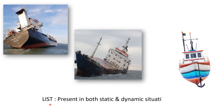List is present in both static and dynamic situations. For example, if the list is present in the ship in a static situation, then it must also be present in the dynamic situation. Here is the case: this is a huge list, and that is a slight list, maybe of 2 or 3 degrees. Any kind of list must be avoided; otherwise the ship would not perform better and it becomes a very unstable ship.